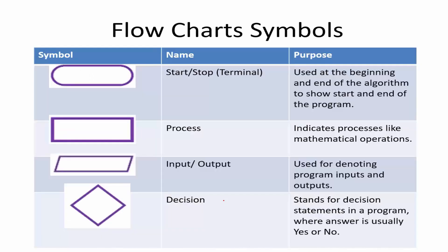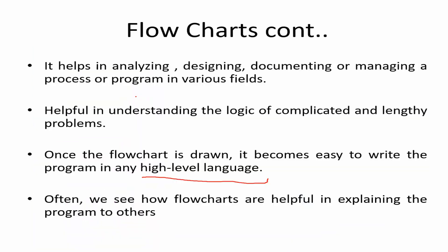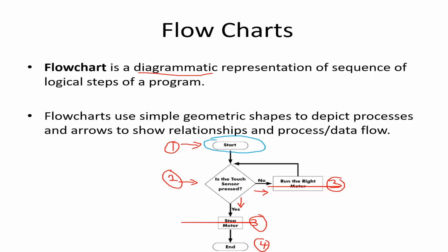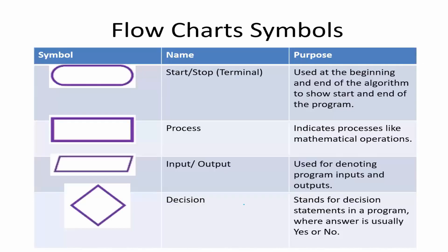Even if flowcharts are simple, you can't use whatever symbols you want. There are a set of standard symbols used to draw flowcharts. The first symbol is the start and stop symbol — also called the terminal symbol. Whenever you start or end an activity, you use this symbol. In the flowchart example, you'll see the start symbol at the first place and the terminal symbol at the end. Every starting and ending point is marked with this symbol.